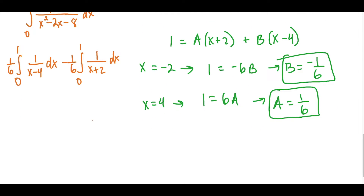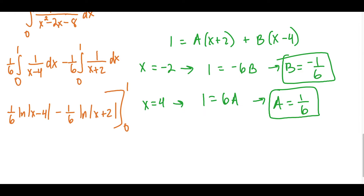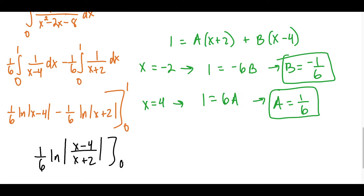For the next part, we're just going to do the antiderivatives. We're going to have 1 over 6 natural log absolute value of x minus 4. And for the second antiderivative, minus 1 over 6 natural log absolute value x plus 2, evaluated from 0 to 1. Before we plug in the limits, we could factor out a 1 over 6 and combine the logs by division — since anytime you have subtraction of logs you can combine them — giving us natural log of x minus 4 over x plus 2, going from x equals 0 to x equals 1.